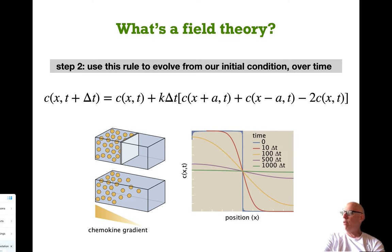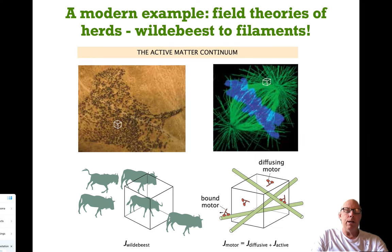This corresponds to what you would have expected intuitively. I started out with half space full at concentration c_naught, and after the system equilibrates I have a uniform distribution at concentration c_naught over two. That's the field theory idea in a nutshell.